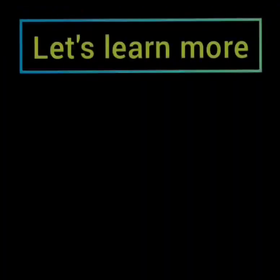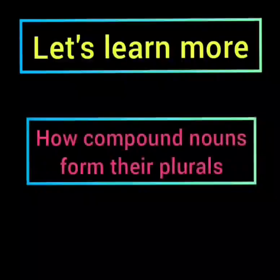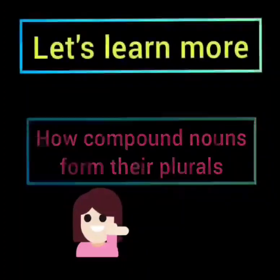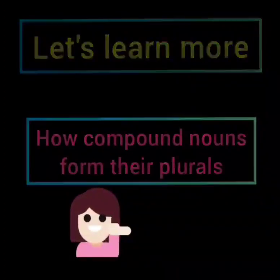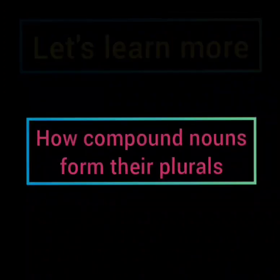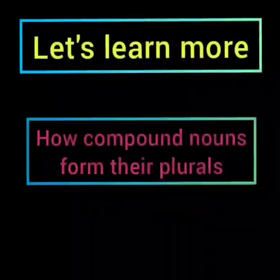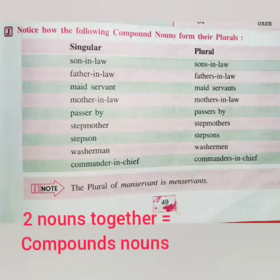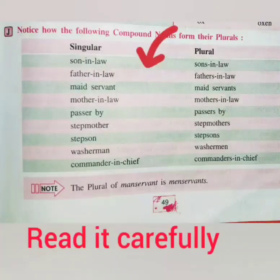So students, now we have to see how compound nouns form their plurals. We have studied almost all the rules and I hope you have understood these rules clearly. So now let's try to understand how compound nouns form their plurals. I hope you all know what compound nouns are. When we have two nouns in a sentence, that would be compound nouns — noun one plus noun two equals compound nouns. So let's see how we can change that. Number one: son-in-law. And what will be the plural for this? Sons-in-law.